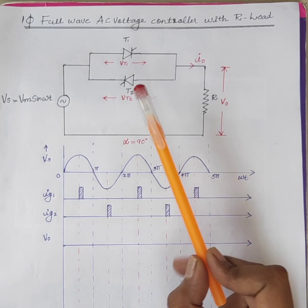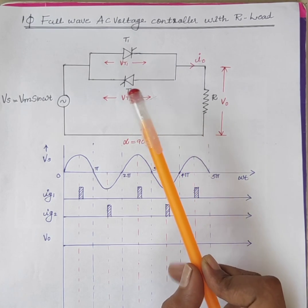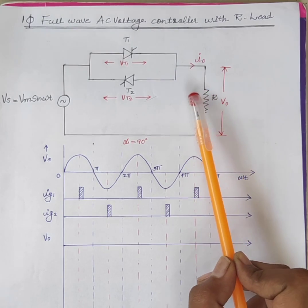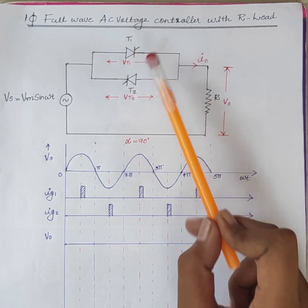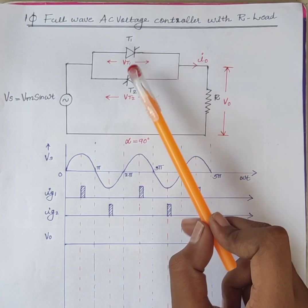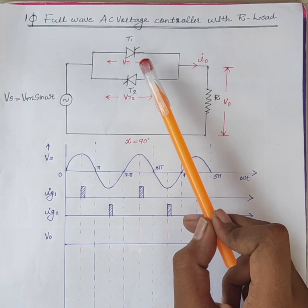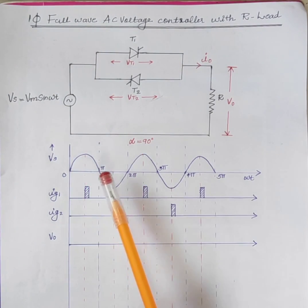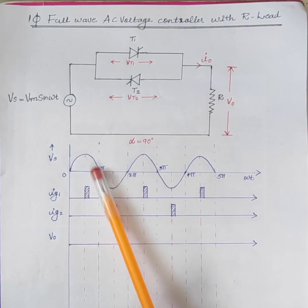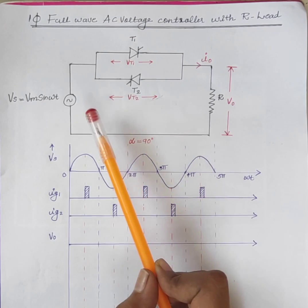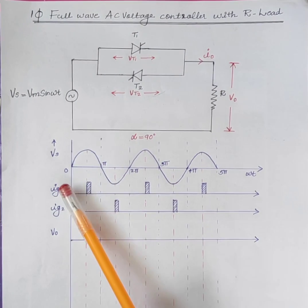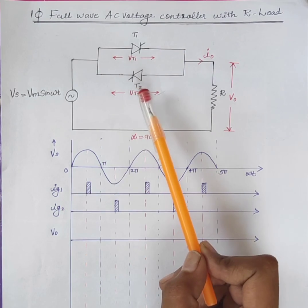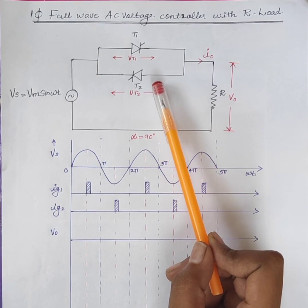The figure shows a single phase AC voltage controller with resistive load. It uses two thyristors T1 and T2 connected in anti-parallel. Here, Vs is the AC input voltage, Ig1 is the firing pulse to thyristor T1, and Ig2 is the firing pulse to thyristor T2.